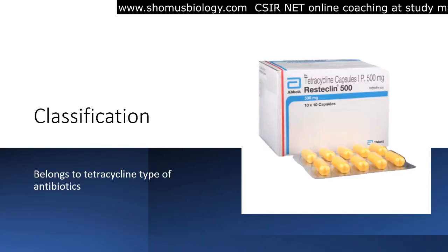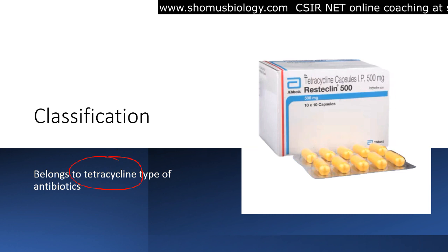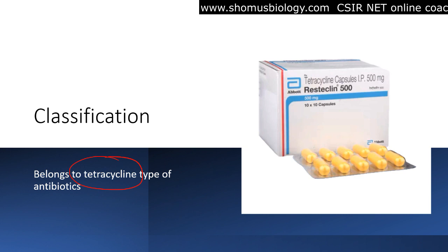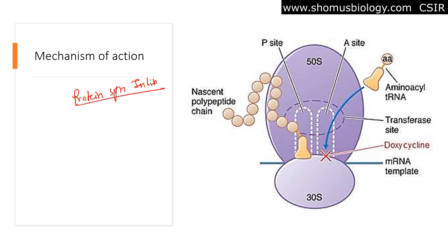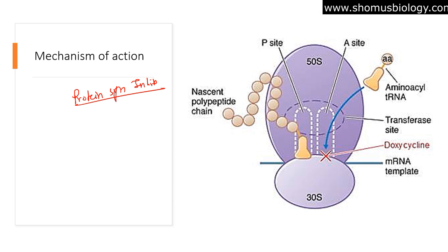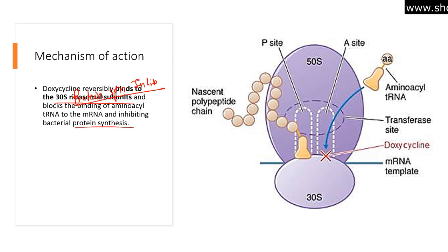What is the classification of this drug? Doxycycline belongs to the tetracycline group of antibiotics. The mode of action — it is a protein synthesis inhibitor. Proteins need to be synthesized by bacteria for their growth. Doxycycline reversibly binds to the 30S ribosomal subunit of the bacteria and blocks the binding of aminoacyl-tRNA to the mRNA, thereby inhibiting protein synthesis.